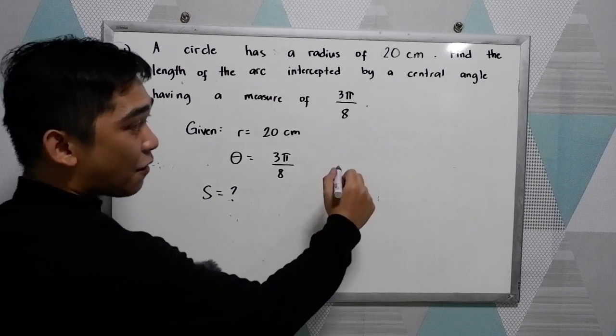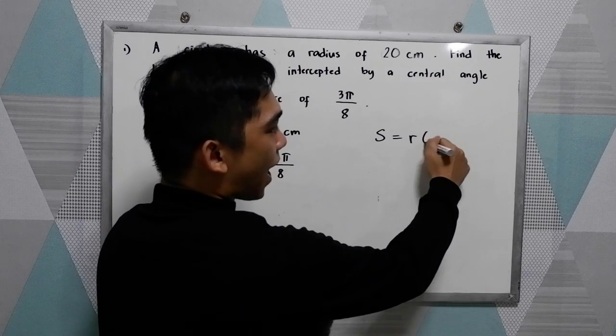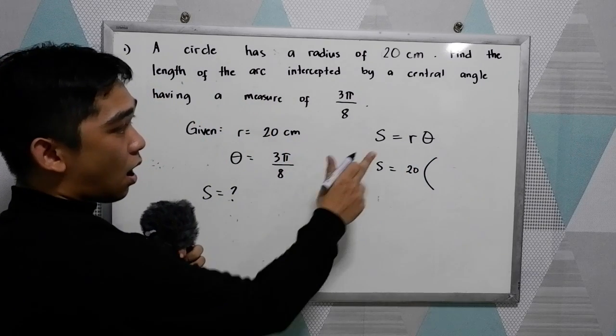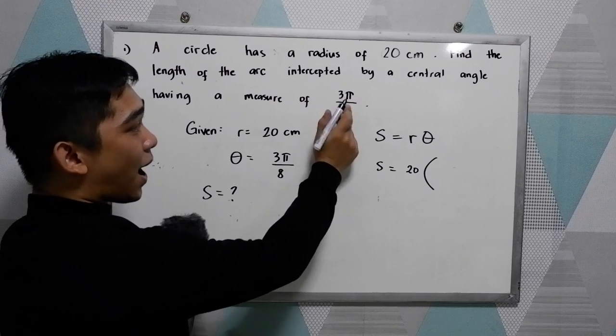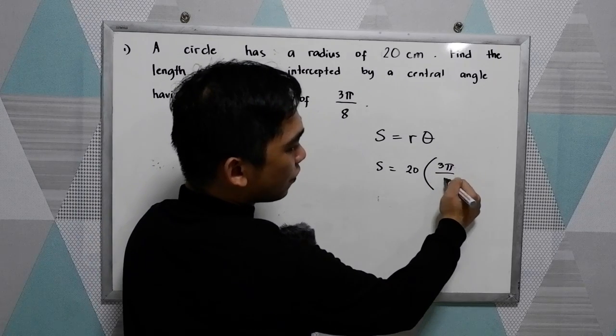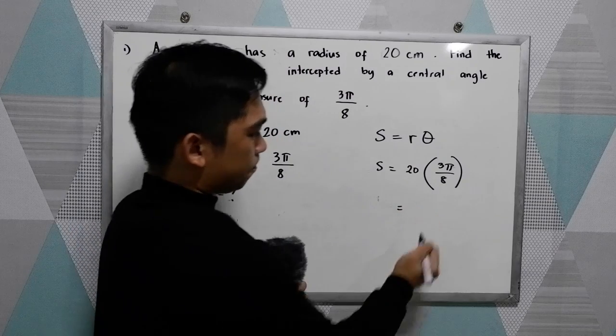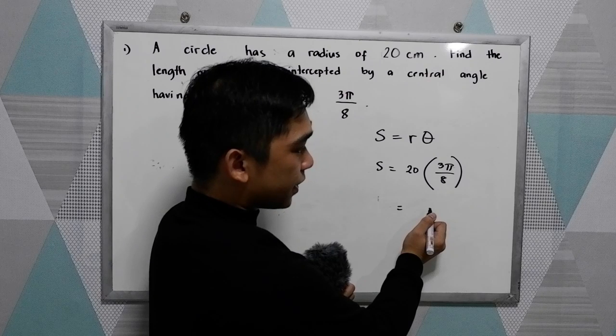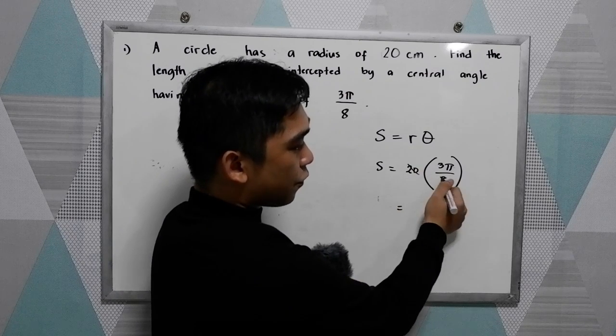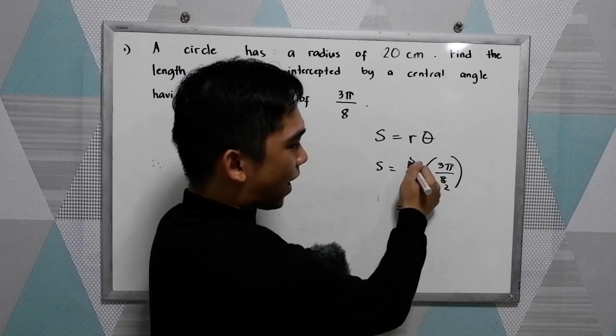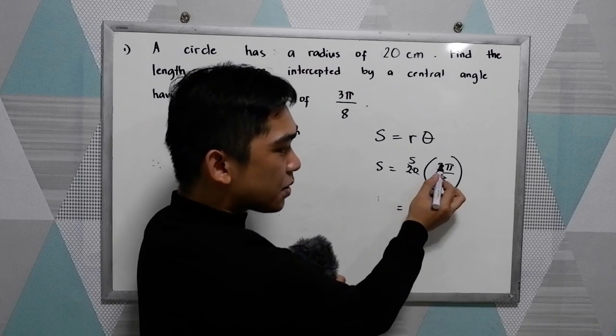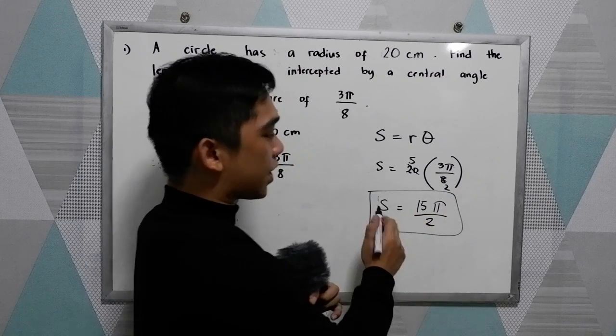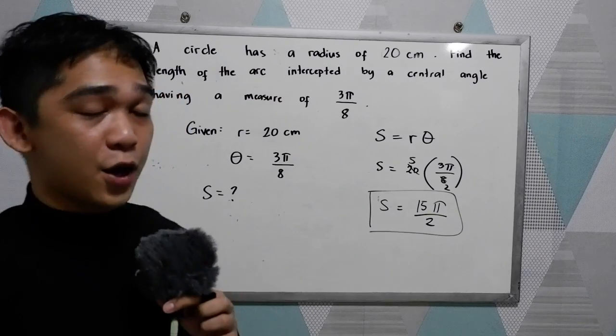We know that we have the formula S is equal to r theta. So S is equal to 20 times our central angle 3 pi over 8. So 3 pi over 8. Cancellation method. So 20 and 8 divisible by 4. So 4 pi over 8, this is 2 and this is 5. So we have 5 times 3, we have 15 pi over 2. This will be the measure of our arc length, 15 pi over 2.